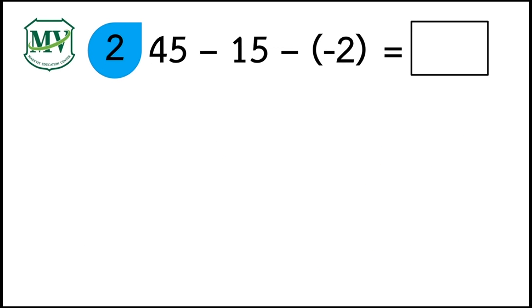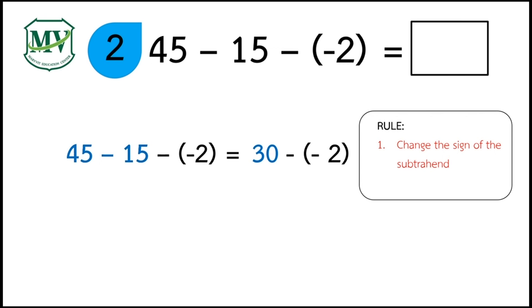Question number 2. 45 minus 15 minus negative 2 is equal to? Let's solve this problem. Follow the PEMDAS rule, which is solving from left to right. 45 minus 15 is equal to 30. Next, find the difference between 30 and negative 2. Copy the Minuend 30. Then change the sign of the subtrahend to positive 2. Add 30 and 2, the answer is 32.